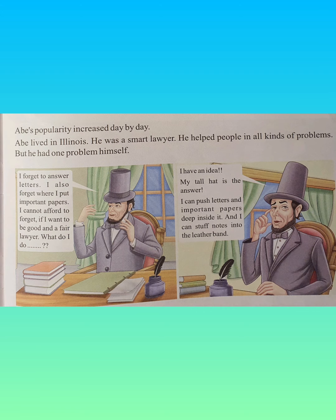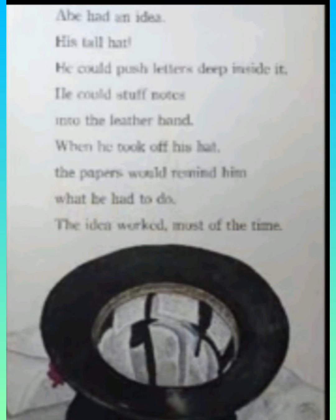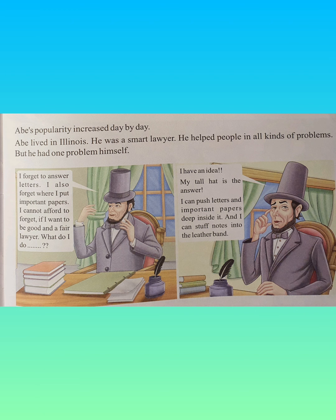So Abraham Lincoln had the problem of forgetting where he had kept his important papers. To solve his problem, he decided to put his important letters and papers deep inside the hat's leather band. Most amazingly, the idea worked brilliantly. Underline brilliantly — brilliantly means in a very bright way.